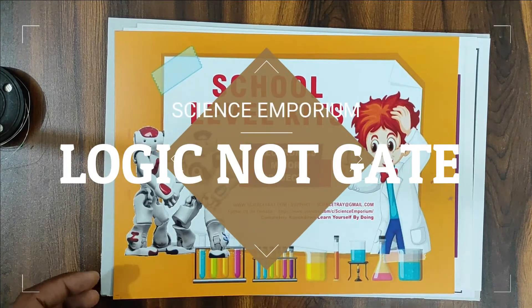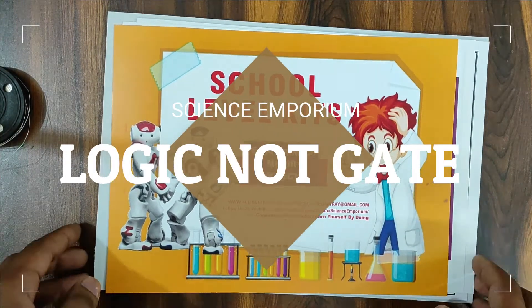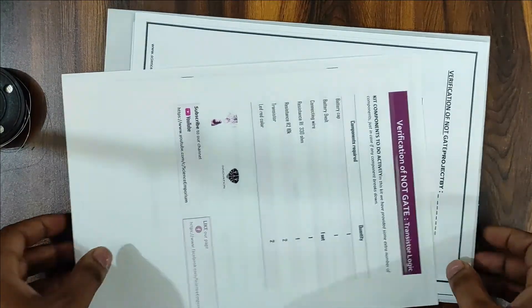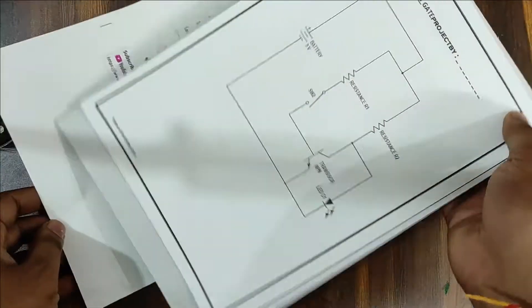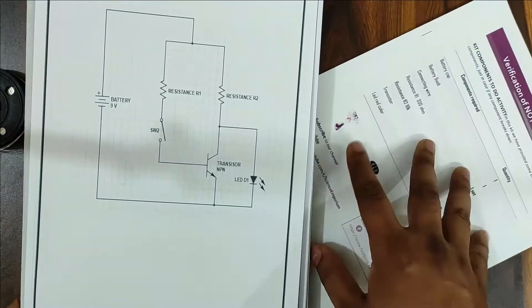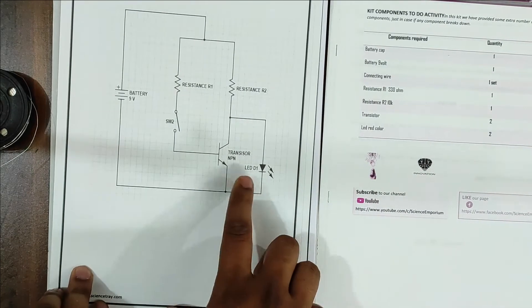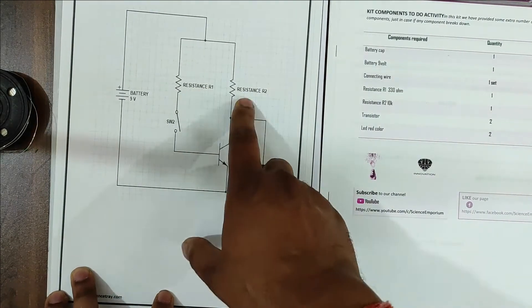Hello friends, welcome to our channel Science Emporium. Here is our new project of NOT gate. In this project we will learn how to make a NOT gate with the help of a transistor. We have used transistor 547B. I will show you all the details on the screen with the help of resistances, switches, battery and LED.